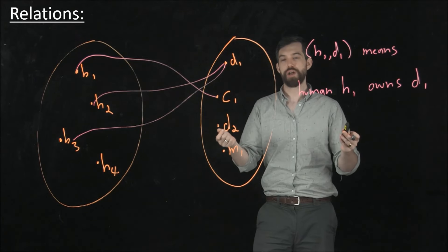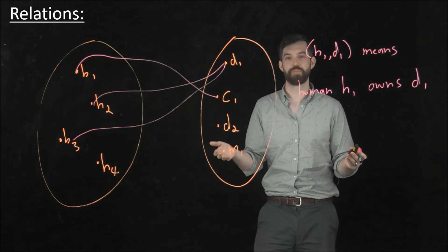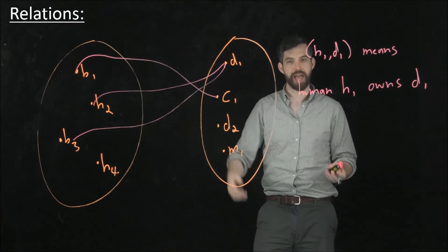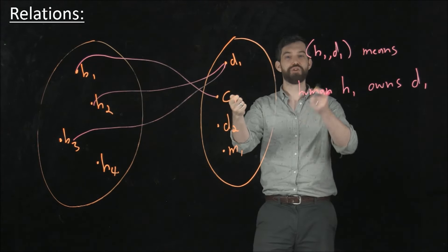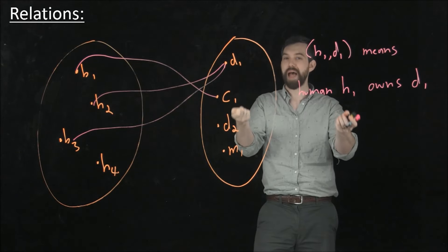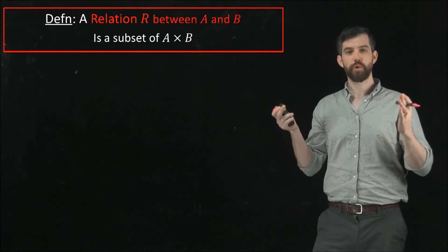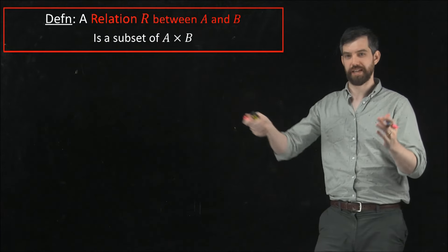And we should be thinking that this has a lot to do with ordered pairs, because all of my relations that I have is I have a first component that is related to a second component, and the order matters, so I have an ordered pair.